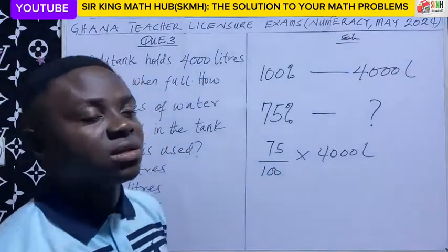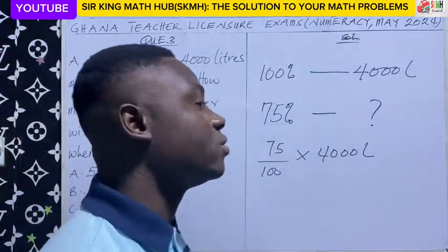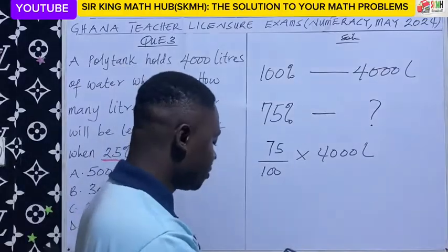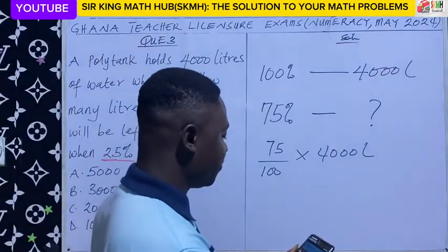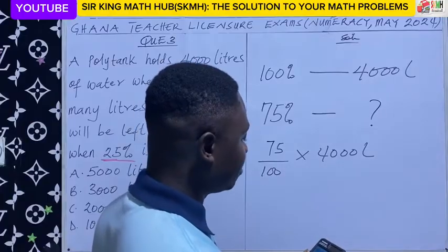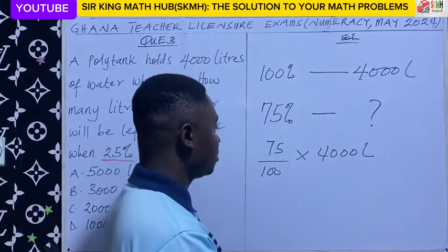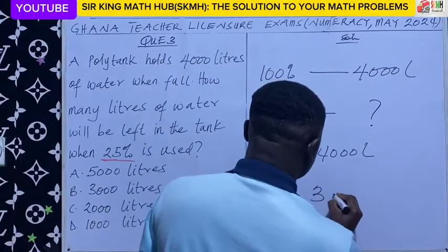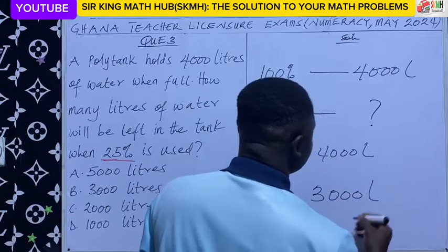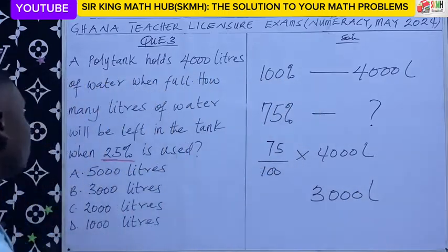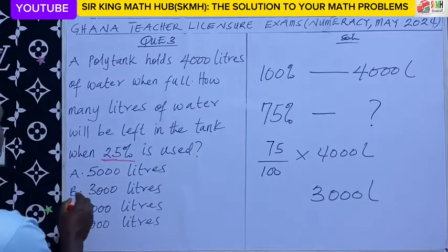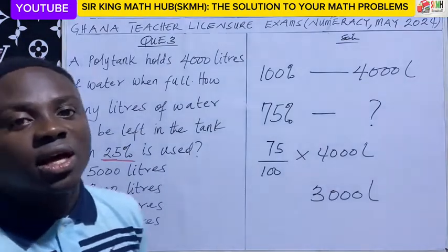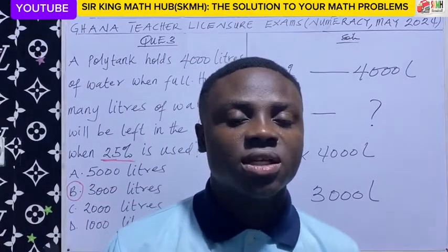As we said, during the exams calculators are allowed. So using our calculator, 75 out of 100 times 4,000 litres gives us 3,000 litres. Looking at the options, the right answer is option B. Thanks for watching. See you next time.